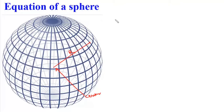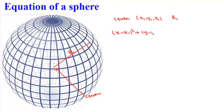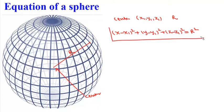Suppose we have a sphere whose center is given by (x1, y1, z1) and whose radius is r. Then the equation of this sphere will be: (x − x1)² + (y − y1)² + (z − z1)² = r². So if we have the center and radius of any sphere, we can write its equation directly.